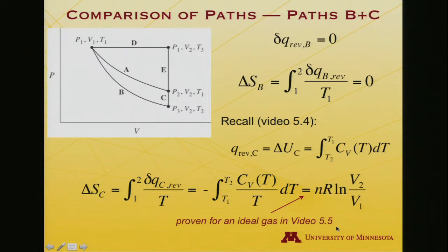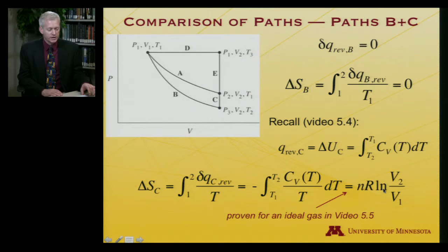And we showed that that was equal to - and this is now in video 5.5 if you want to see the individual steps, I'm just going to recall the answer - it is equal to nR log V2 over V1. This is indeed then, when I sum this result with this result, zero plus nR log V2 over V1 is indeed this term, and that's just what we found for path A.